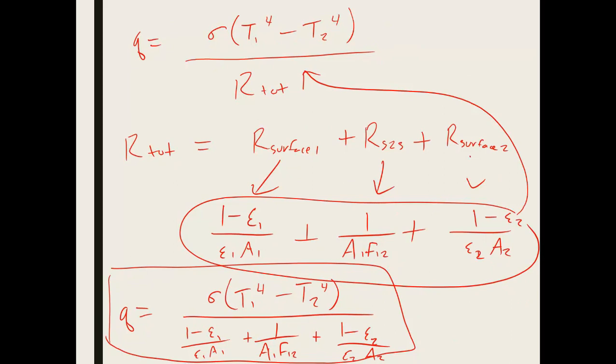So probably finding the view factors is one of the trickier parts of the problem and the relevant surface areas. And I'm actually going to spare you the plug and chugging part, but this is the equation that we get. And this is going to give us the total amount, the net amount of heat that would be leaving surface 1 and going to surface 2.